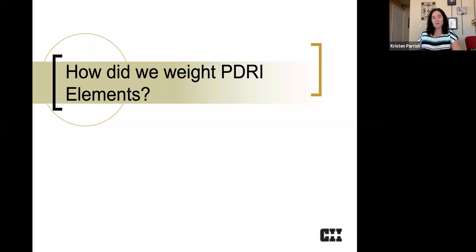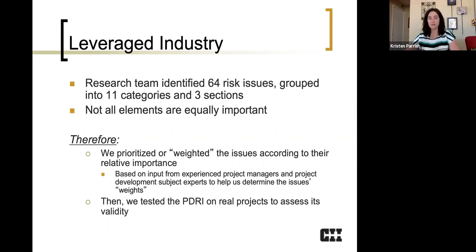So a lot of people are curious about how exactly we develop this because if you look, they might seem a little arbitrary. So the way that we did it, we leveraged all of you. We leveraged the industry. The research team, that was research team 155, identified these front-end scope risk issues, grouped them into 11 categories in three sections.